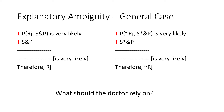It should be noted that there is no analogue of this problem in deductive nomological explanations. The reason is that deductive nomological explanations are truth-preserving. So if the premises are true, the conclusion must be true, and if we consider our set of scientific knowledge to be internally consistent, it's never possible to have two contradicting explanations.